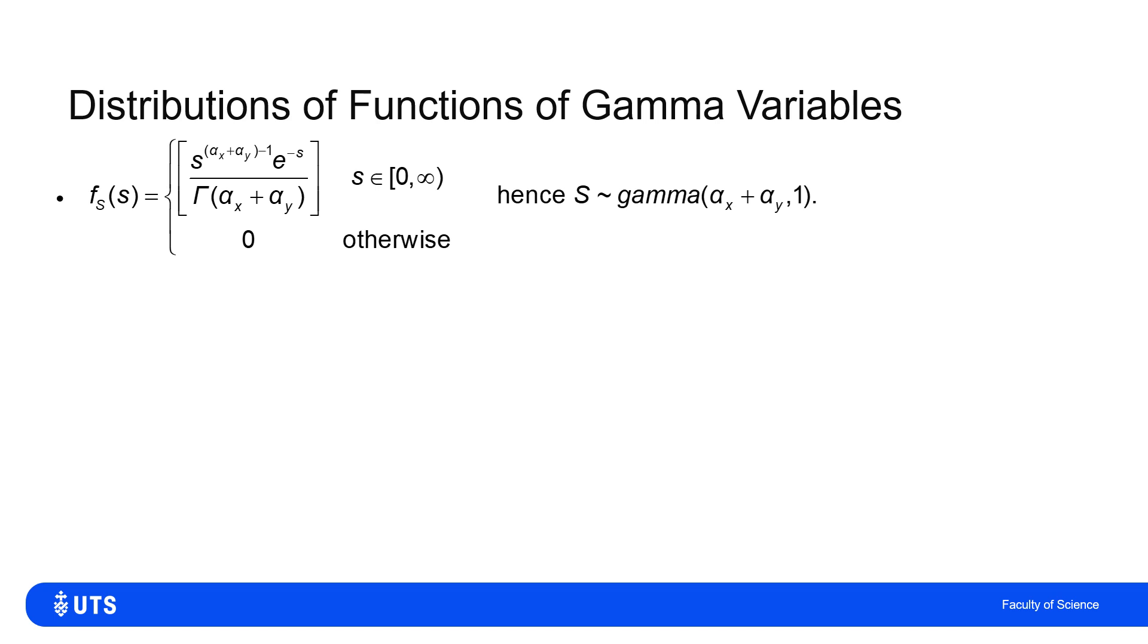So in other words, if I have two gammas with the same rate parameter, if I take the distribution of the sum of them, I'll just sum the first parameters.